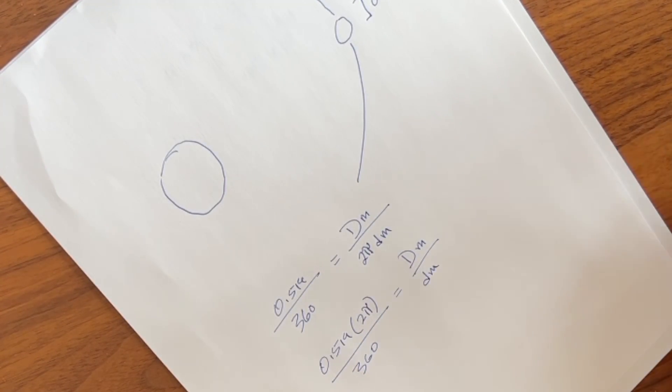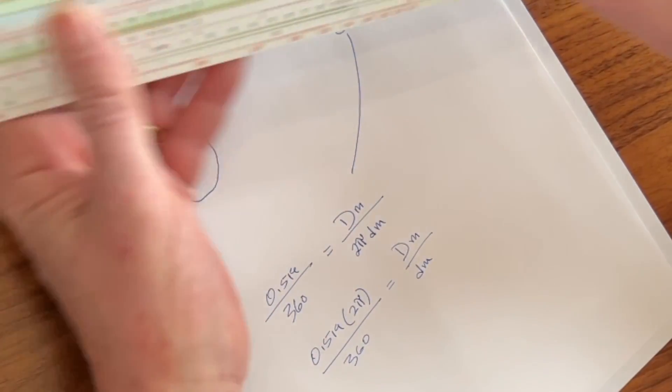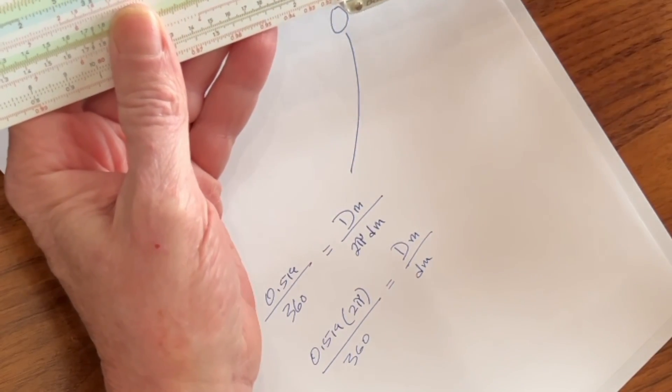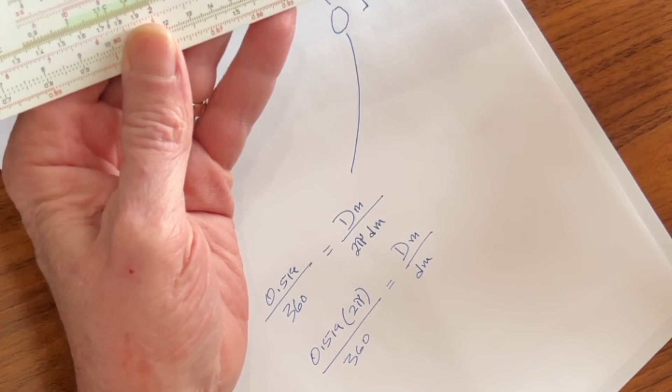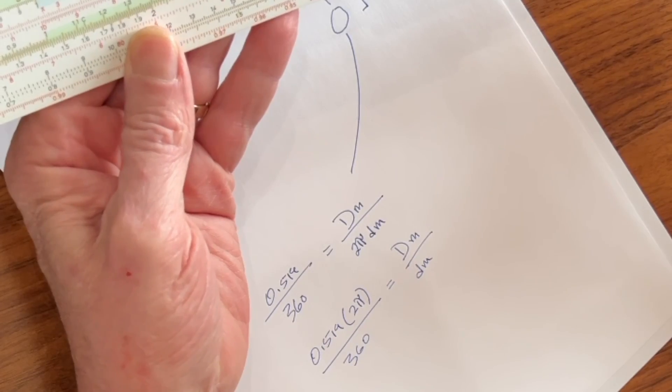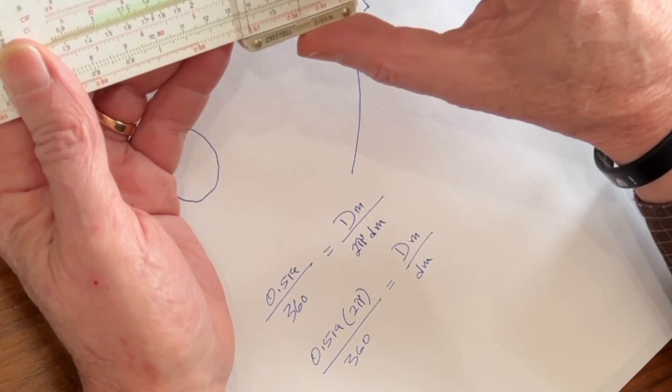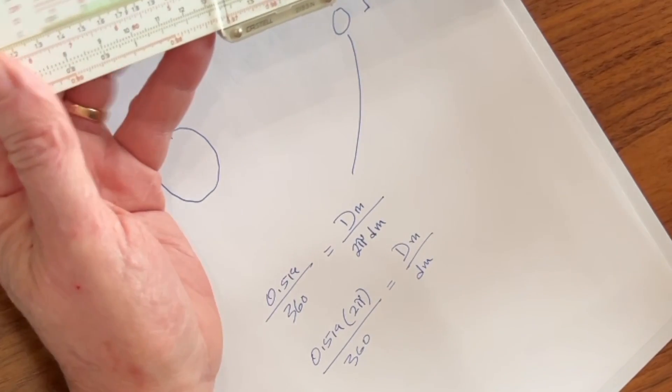Now we can solve for this. So let's go ahead and do that. Let's take 519, which is right there, divide it by 360. We could also simplify this. Times 2, times pi.